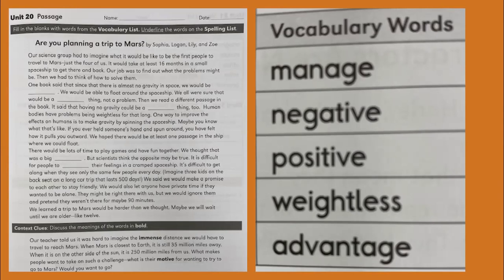We said we would make a promise to each other to stay friendly. We would also let anyone have private time if they wanted to be alone. They might be right there with us, but we would ignore them and pretend they weren't there for maybe 90 minutes. We learned a trip to Mars would be harder than we thought. Maybe we will wait until we are older, like 12.